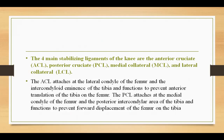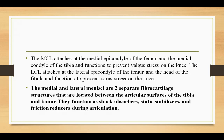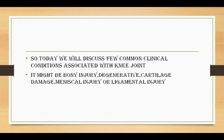There are mainly four stabilizing ligaments of the knee joint: the anterior cruciate ligament, posterior cruciate ligament, medial cruciate ligament, and the lateral cruciate ligament. There are two menisci — the medial meniscus and the lateral meniscus. The MCL attaches to the medial epicondyle of the femur and the LCL attaches to the lateral epicondyle of the femur. The two menisci serve as shock absorbers and static stabilizers, and reduce friction.